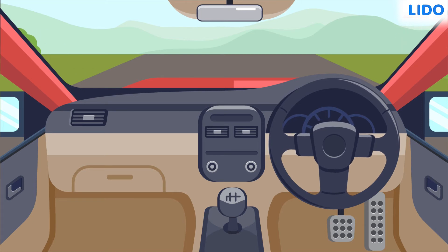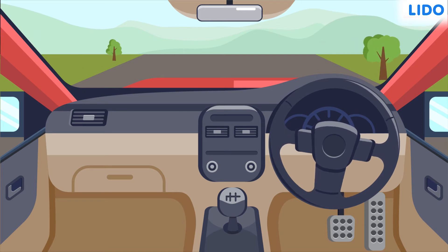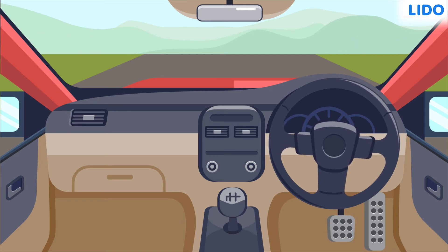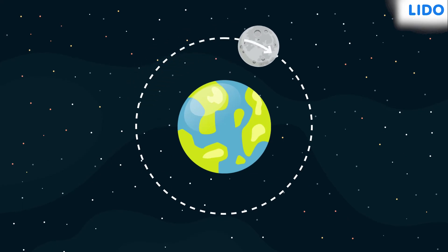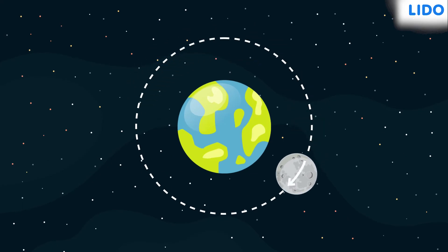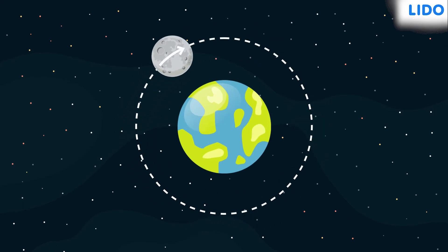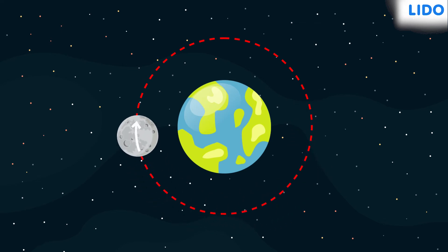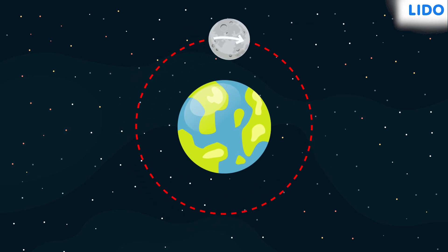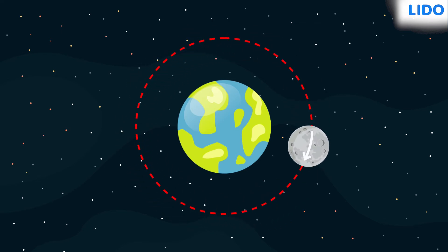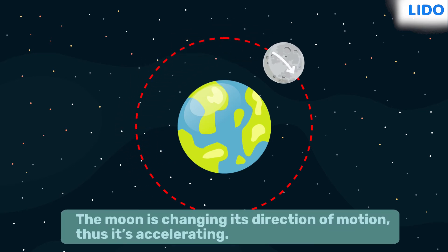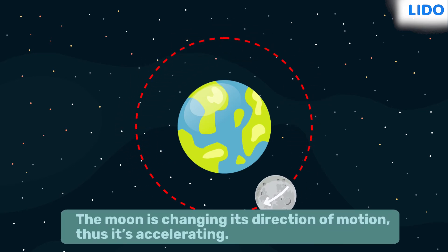Let's try and rethink multiple situations around us in which we may have confused these terms. Look at the moon. Does the moon accelerate? It's moving in a circular path around the earth and thus changing direction. Because the moon is changing its direction of motion, it's accelerating.